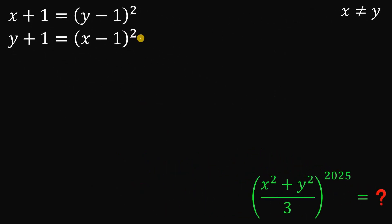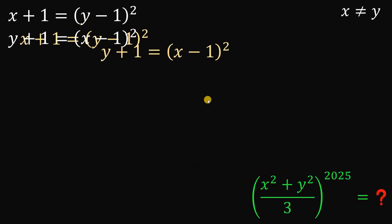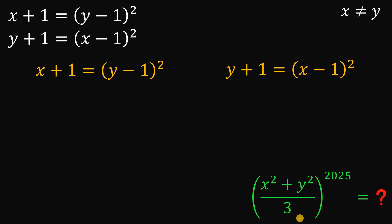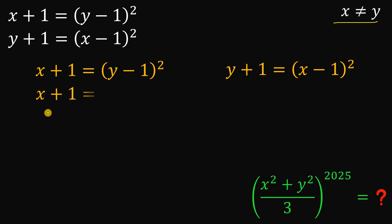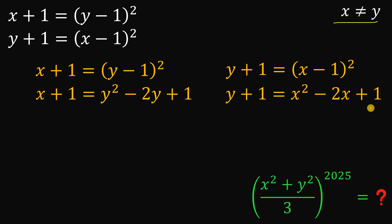Alright. So given these two equations, the goal is to evaluate the expression x squared plus y squared over 3 raised to the power of 2025. To handle this kind of question, we're going to expand first the right-hand side of both equations. So we get x plus 1 equals y squared minus 2y plus 1, and on the other side, x squared minus 2x plus 1.